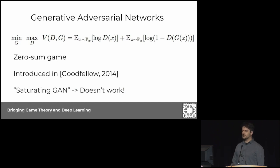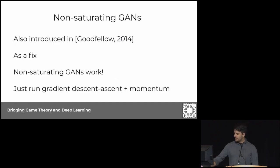The authors of the same paper ended up introducing an alternative formulation, still an adversarial formulation but not zero-sum, and they call it non-saturating GANs. This was a fix because non-saturating GANs work. You just run gradient descent ascent plus momentum and they were able to get some very nice results for this first attempt.